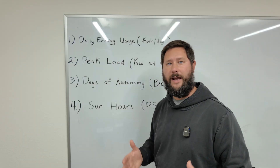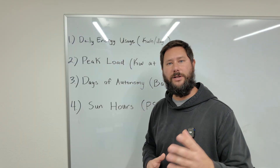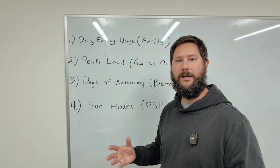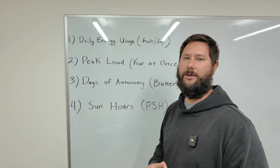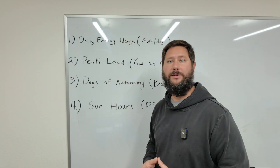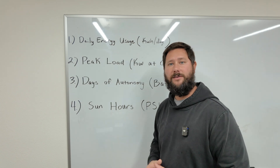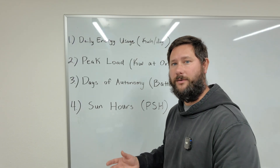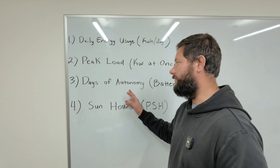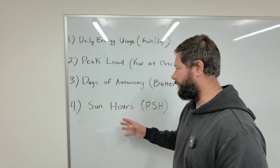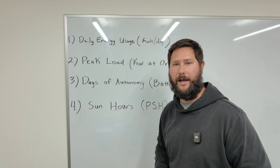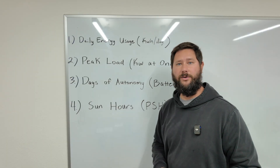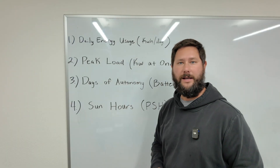The first number that you need is your daily energy usage — the kilowatt hours that you use for your home per day. The second is your peak load: the kilowatts that you use all at once, your max kilowatts, and you're going to use this to size your inverter. Number three is your days of autonomy for your batteries — how many hours or days do you want to just use your batteries to power your home. Number four is your peak sun hours for your location, which is going to be used to size your solar array.